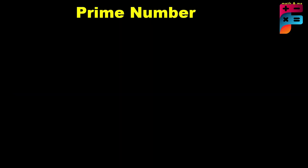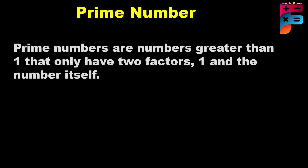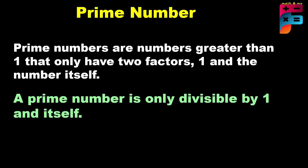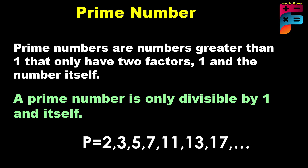Second, prime numbers. Prime numbers are numbers greater than one that only have two factors: one and the number itself. A prime number is only divisible by one and itself — like 2, 3, 5, 7, 11, 13, and 17, and so on.